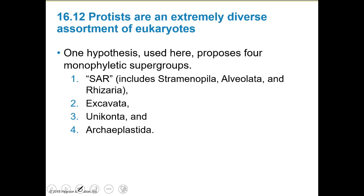One hypothesis is that we have four monophyletic supergroups. It used to be five, so a tendency is to think of Alveolata and Rhizaria as separate, but now we call them SAR — Straminopila, Alveolata, and Rhizaria — all one supergroup together. We also have Excavata, Uniconta, and Archaeplastida.